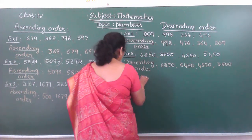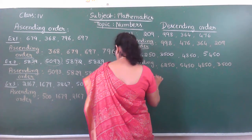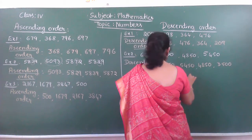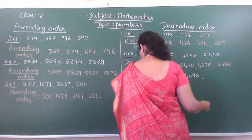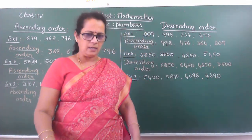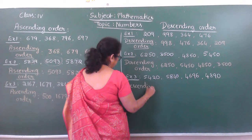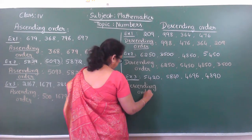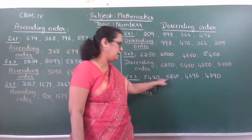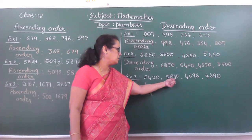I will write the next example sum. Example 3: 5,420; 5,840; 4,696; then 4,890. Write this in descending order. The biggest numbers include 5,420 and 5,840. If the numbers are same in thousands place, go through the hundreds place.